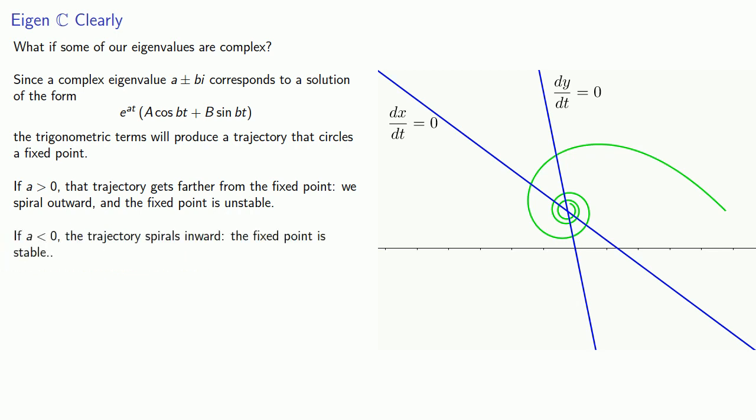On the other hand, if a is less than zero, our exponential part goes to zero, and our trajectory spirals inward, and the fixed point is stable.